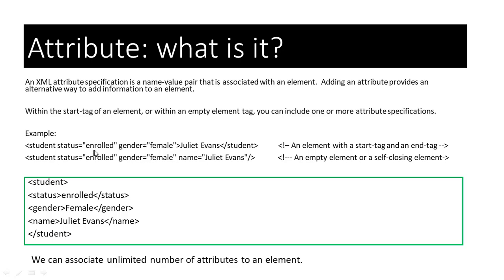In other words, this is an element with some attributes. Here we have the same data presented but as elements. Student is an element with child elements. Here we are only using elements, no attributes. Student element has child elements — status is an element, gender is an element, name is also an element. Normally, we can associate an unlimited number of attributes to an element. There is no limit for the number of attributes that an element can have.